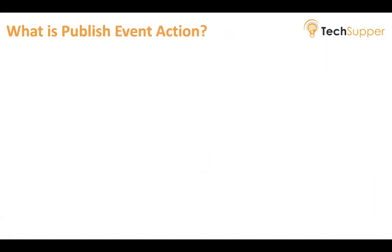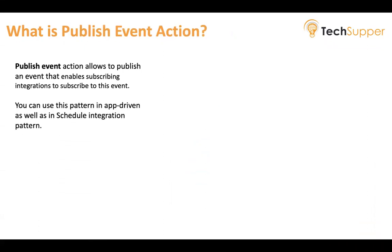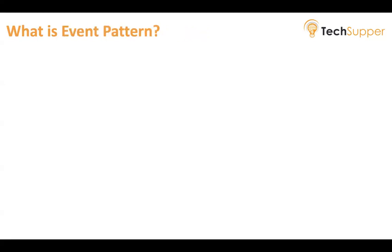Once your event is created, you have to publish it. The Publish Event Action is a new action introduced in the list of actions in Oracle Integration 3. This new action allows you to publish an event, enabling subscribing integrations to subscribe to it. You can use any pattern — either app-driven or scheduled integration — to use this action. This is how the new Publish Event action looks, and when you drop it, it gives you the list of events you have created to choose from.